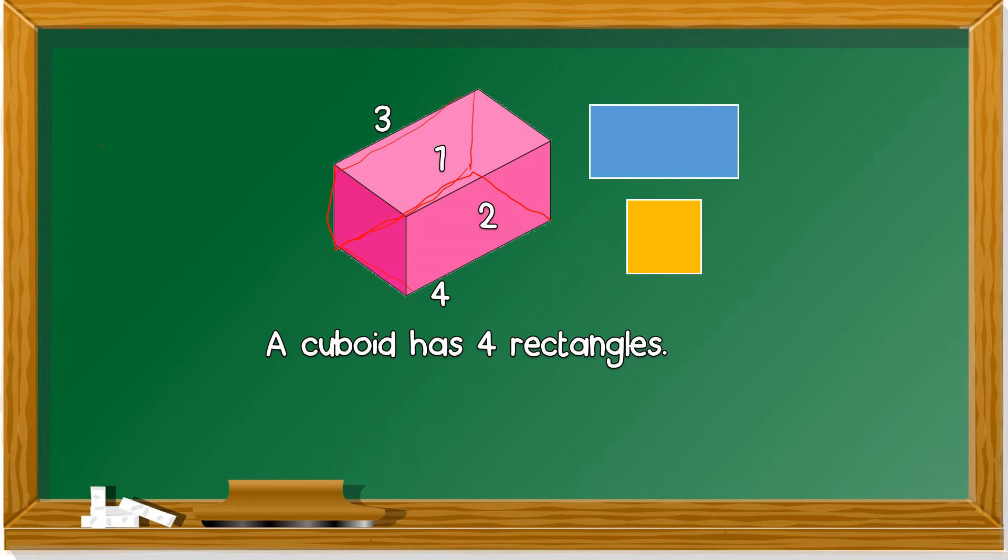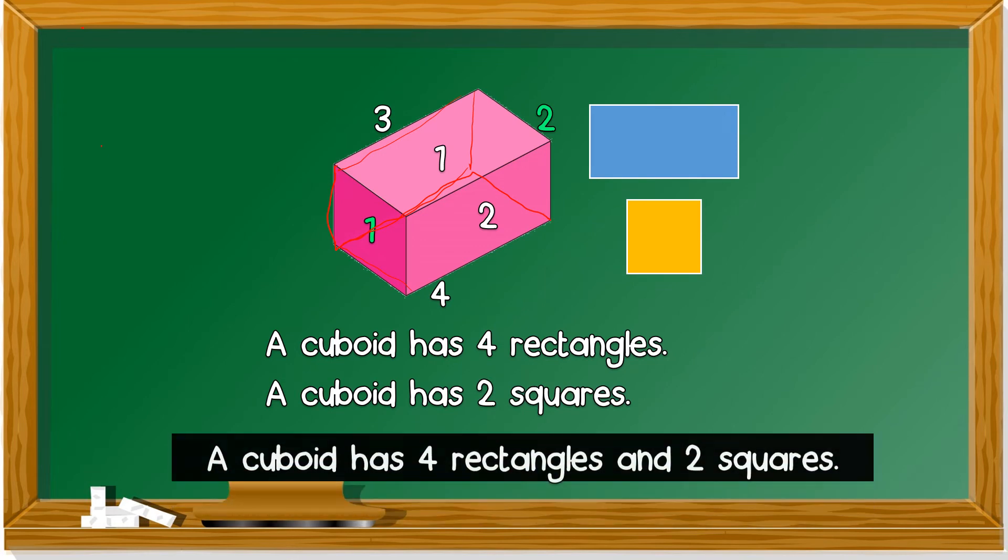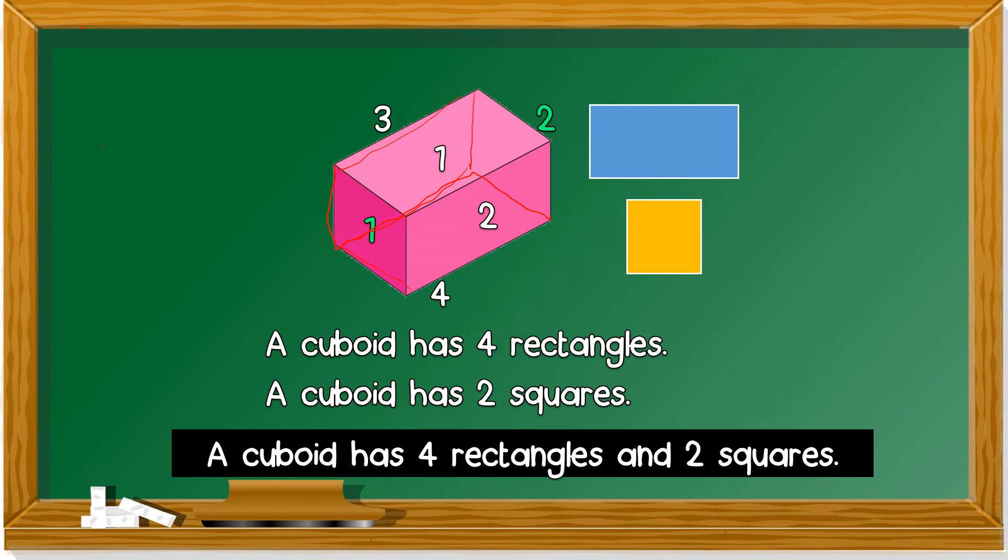How about the square? 1, 2 at each side. It has 2 squares. So this cuboid has 4 rectangles and 2 squares.